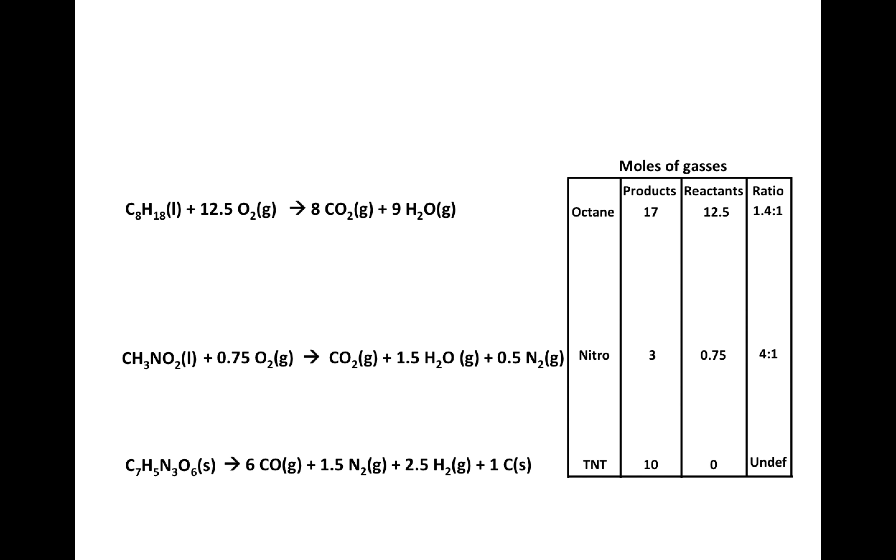Adding nitromethane into our table we see we have, in terms of gases, we have three moles of gases in the product side and only 0.75 or three quarters of a mole on the reactant side and it gives me a ratio of 4 to 1 for nitromethane compared to octane which is only 1.4 to 1.